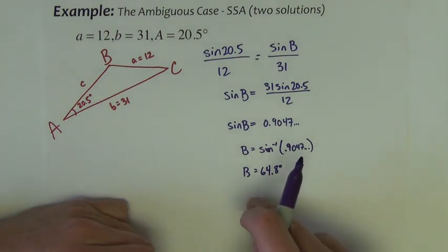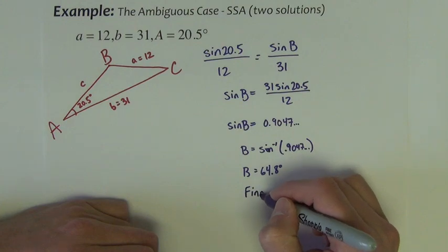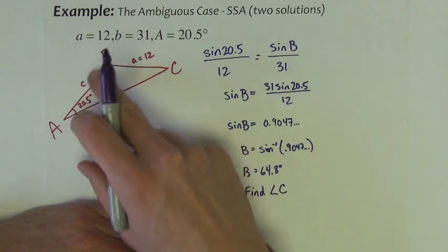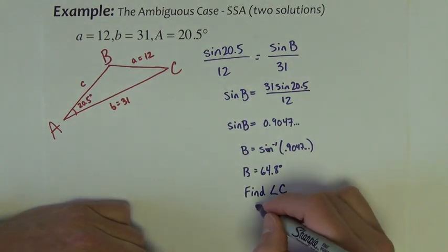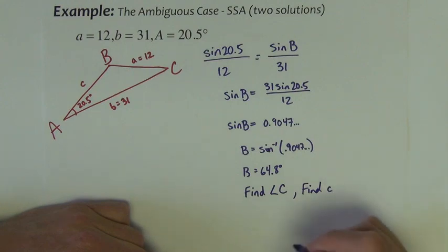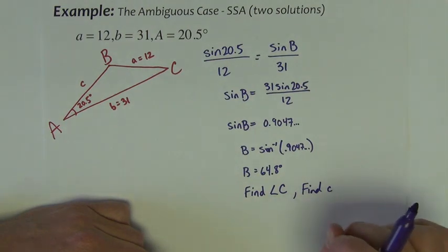Now, with that we could then find angle C by taking 180 minus these two. We could then find little c by setting up another one of these. Well let's kind of skip all that work because we've done it a couple times already and I think you're probably getting the hang of it.